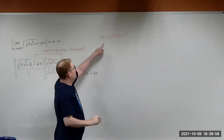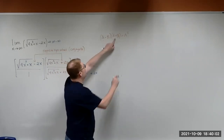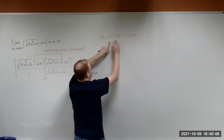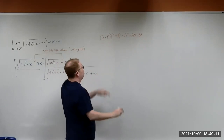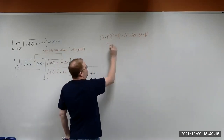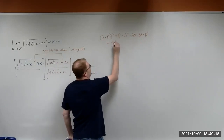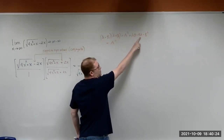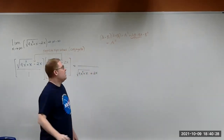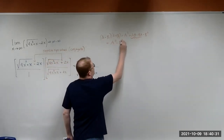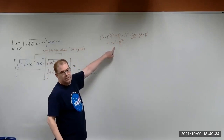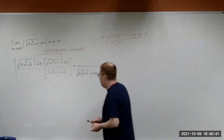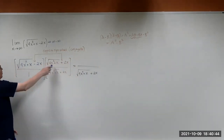When you expand that, you get A squared, plus A times B, then minus B times A, then minus B squared. The middle terms cancel — A times B and minus B times A sum to zero — and we're left with A squared minus B squared. This is just the difference of two squares, and we can apply that here when we multiply these out.